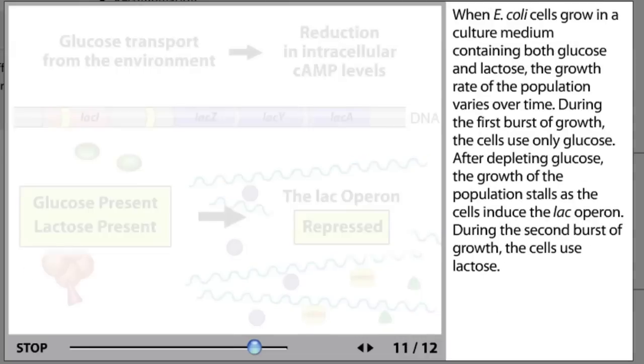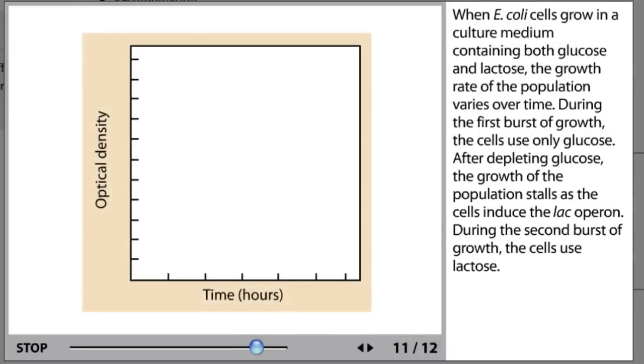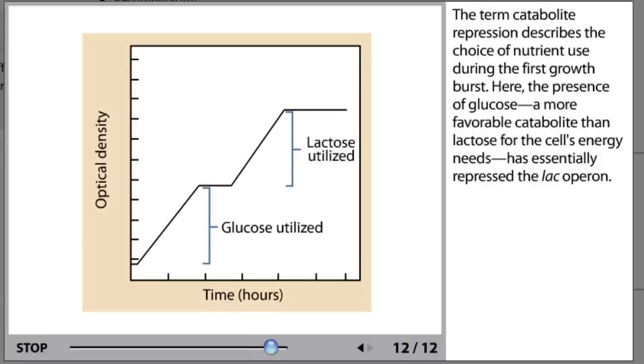When E. coli cells grow in a culture medium containing both glucose and lactose, the growth rate of the population varies over time. During the first burst of growth, the cells use only glucose. After depleting glucose, the growth of the population stalls as the cells induce the lac operon. During the second burst of growth, the cells use lactose. The term catabolite repression describes the choice of nutrient use during the first growth burst. Here, the presence of glucose, a more favorable catabolite than lactose for the cell's energy needs, has essentially repressed the lac operon.